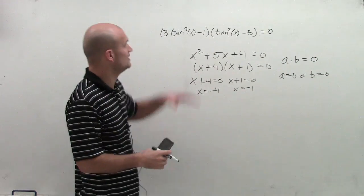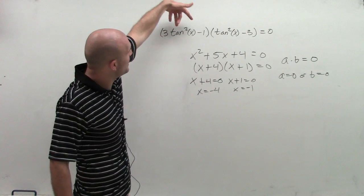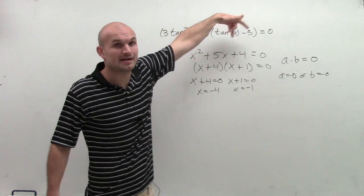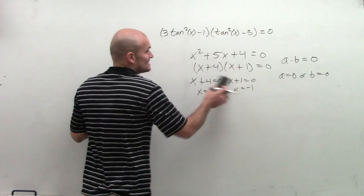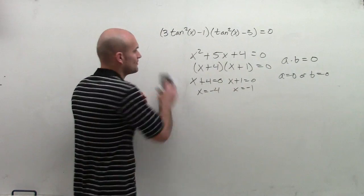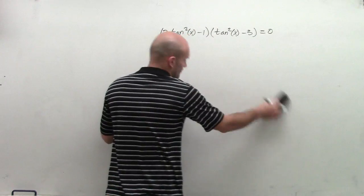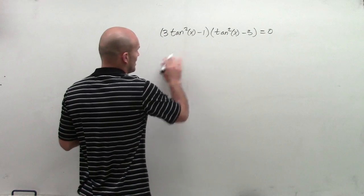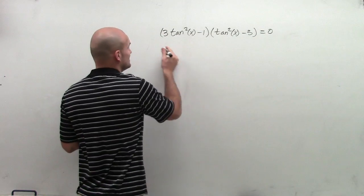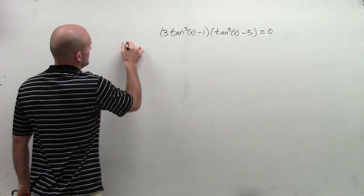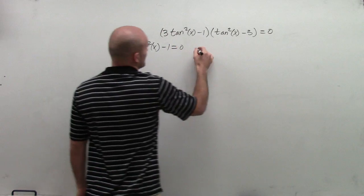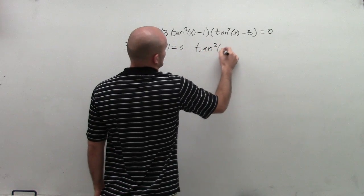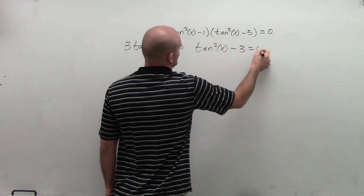So what I notice here, when looking at this problem, I notice I have a binomial times another binomial equals 0. That means this has to equal 0, or this has to equal 0 for our equation to be true. So what I'm going to do, similar to what I did with quadratics, is I'm going to set these both equal to 0. So I'm going to have 3 tangent squared of x minus 1 equals 0, and tangent squared of x minus 3 equals 0.